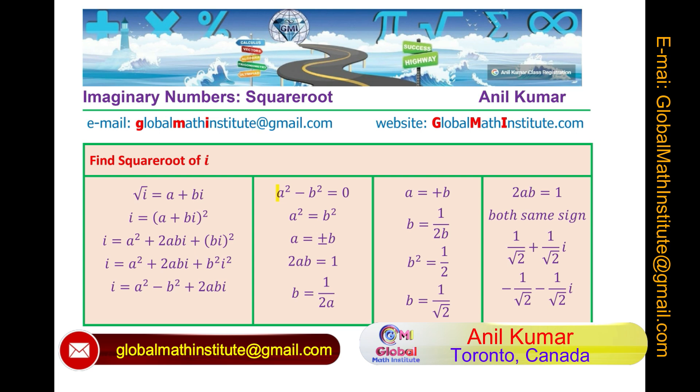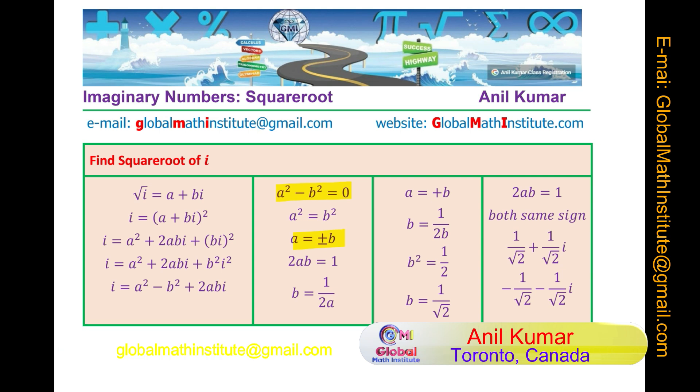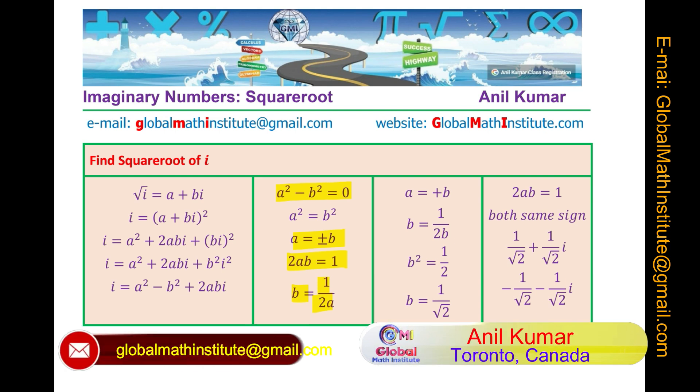So, once you compare the real parts, you get that a is equals to plus minus b and then when you compare the imaginary parts, you get b equals to half of a. Now, equating the two, we get two different solutions which are these. So, that becomes the solution for this particular equation. I hope you find it interesting and useful.